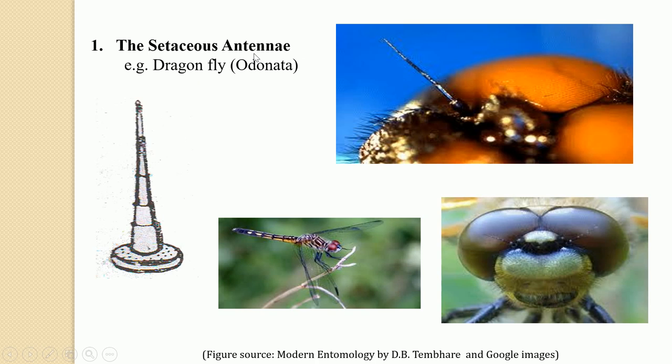The setaceous antennae is characteristic of the Odonata — they are generally found in insects like the dragonfly. In this diagram you can see the dragonfly, and here is the magnified photograph of the head of the dragonfly. You can see the clypeal region and these bristle-like antennae, which are referred to as the setaceous antennae.